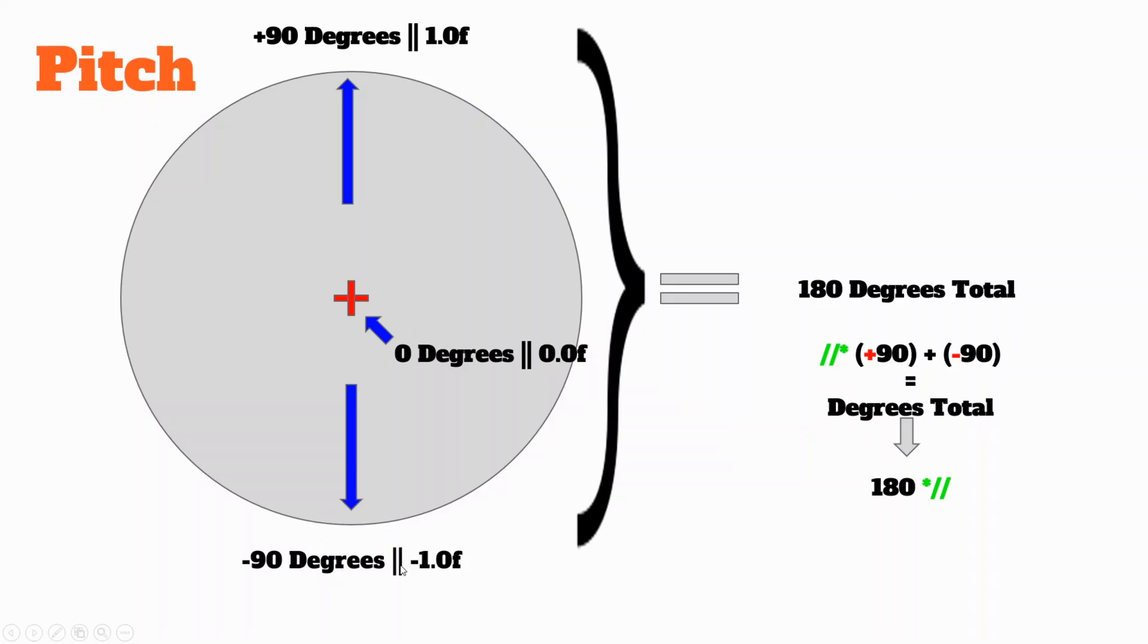Altogether, your degrees is 180, because when you look up it's plus 90, and when you look down it's negative 90. If we use operators, it's just 90 plus 90, which is 180 degrees.